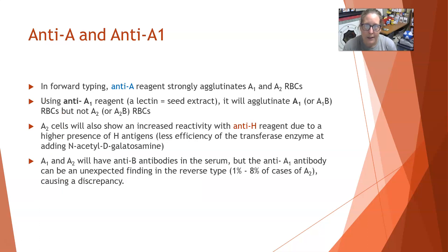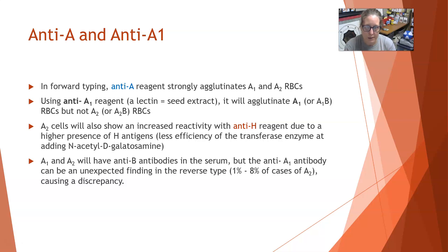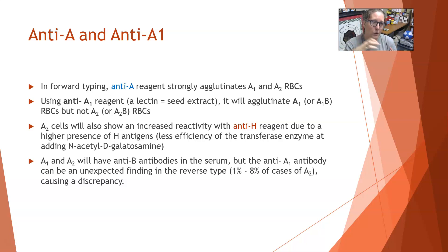In the forward typing reaction, anti-A reagent is used and it strongly agglutinates both A1 and A2 red cells. But if you use anti-A1 reagent — which is a lectin made from a seed extract — it reacts with and agglutinates A1 red cells or A1B red cells, but will not agglutinate A2 or A2B red cells. A2 cells will also show increased reactivity with anti-H reagents, because there is a higher presence of the H antigen since the A2 subtype is not as efficient at converting H into A antigen.